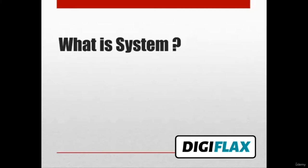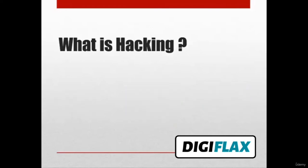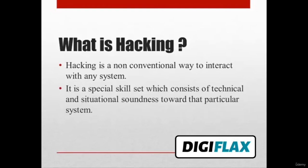Before we start with hacking, let us first cover what is a system. A system mainly contains three parts: input, output, and a process. This is how these three components are connected. You have seen systems in your day-to-day life. Hacking is a non-conventional way to interact with any system. It is a special skill set which consists of technical and situational soundness towards the particular system.